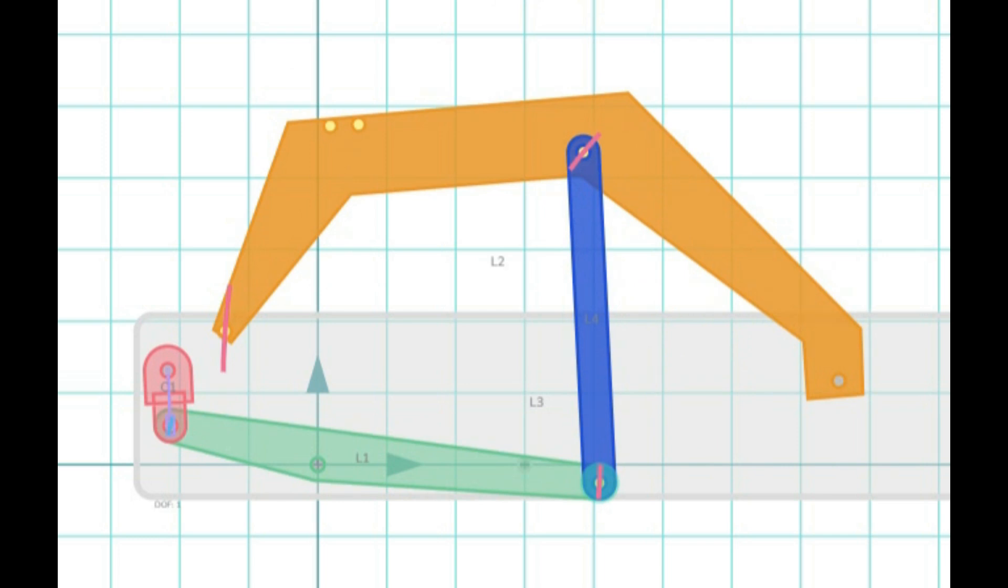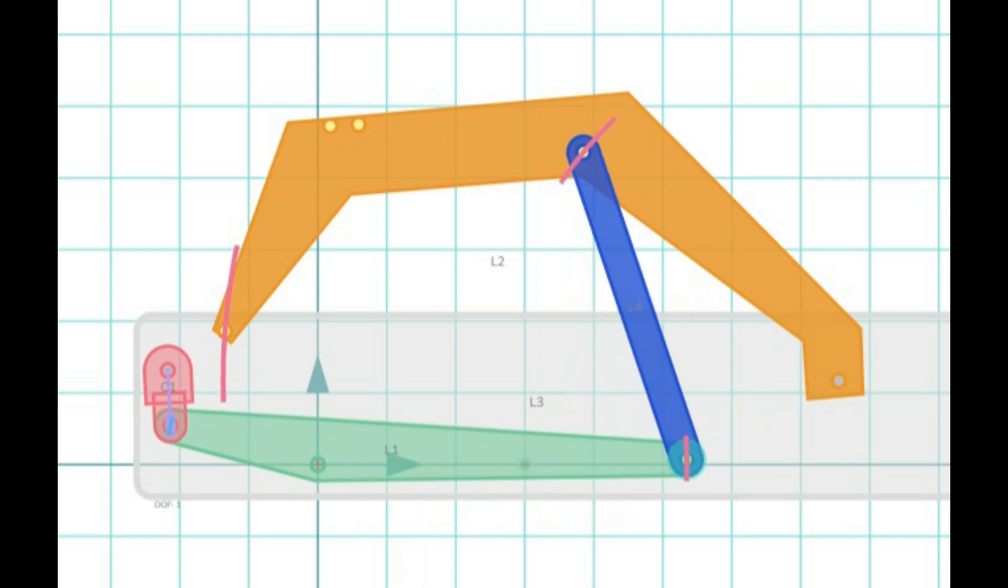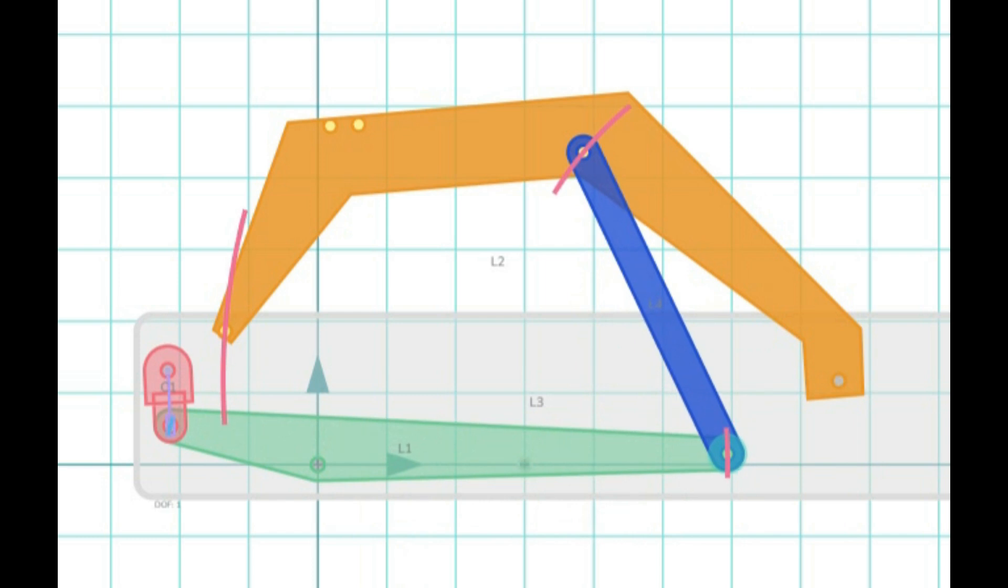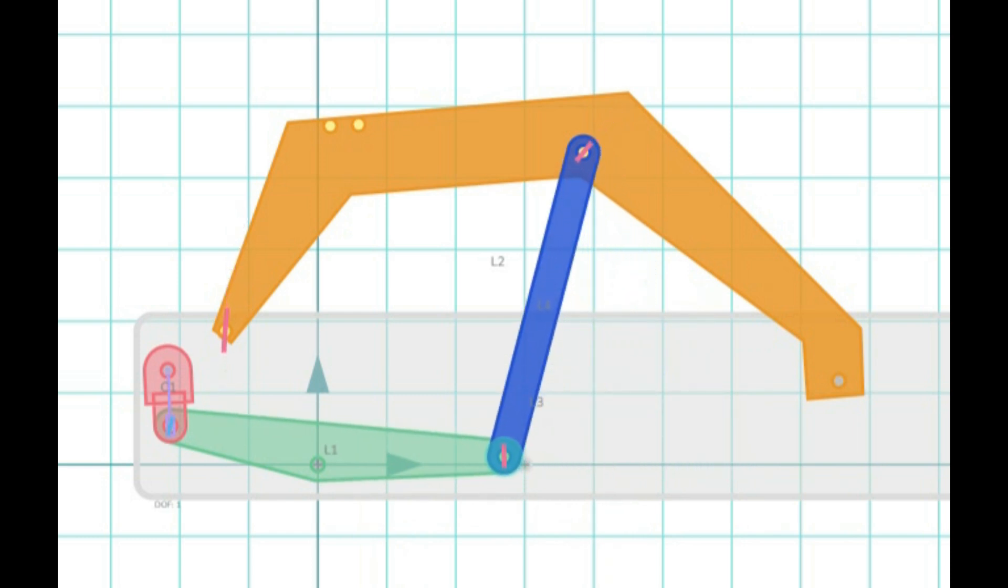Now let's look at the impact of changing the point where the blue link hits the green element. If we make it longer, it doesn't do much. If we make it longer in the horizontal direction, it increases the stroke of the arm in both directions. If we bring it closer to the pivot point of the beam, the stroke gets very small. Let's undo that.